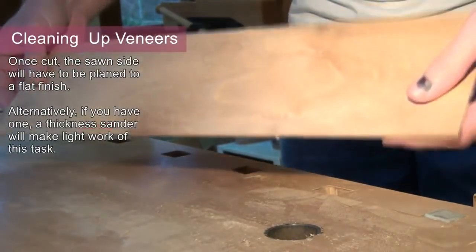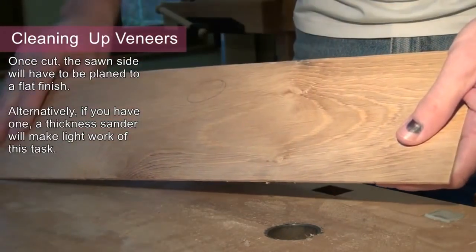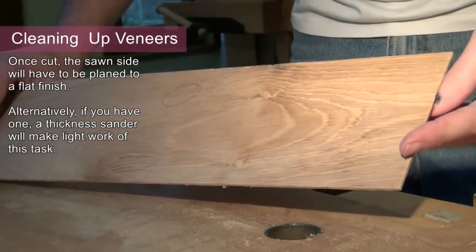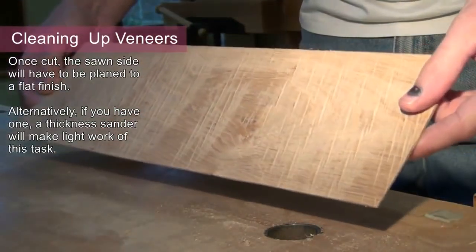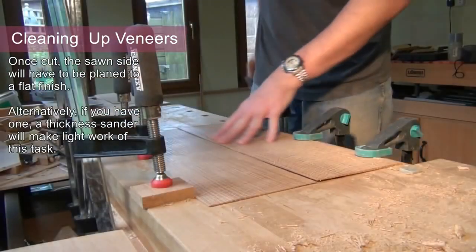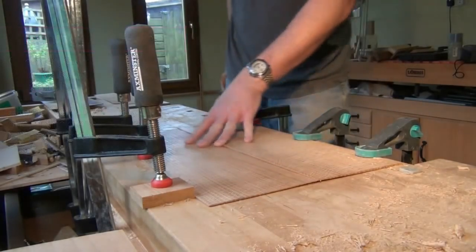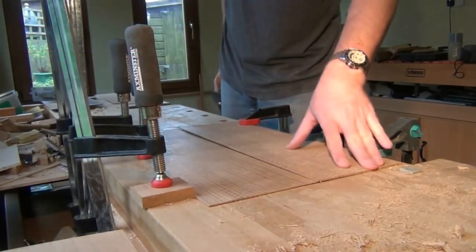From the bandsaw, our veneers have come one smooth side that we planed before cutting and then a bandsaw side. With the veneers clamped suitably to the bench, we can now remove all the bandsaw marks.